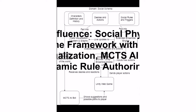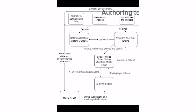Here is the big picture of our game framework. Authoring tools help to create the social rules. The social schema defines the desires, actions, and social rules that the characters follow.